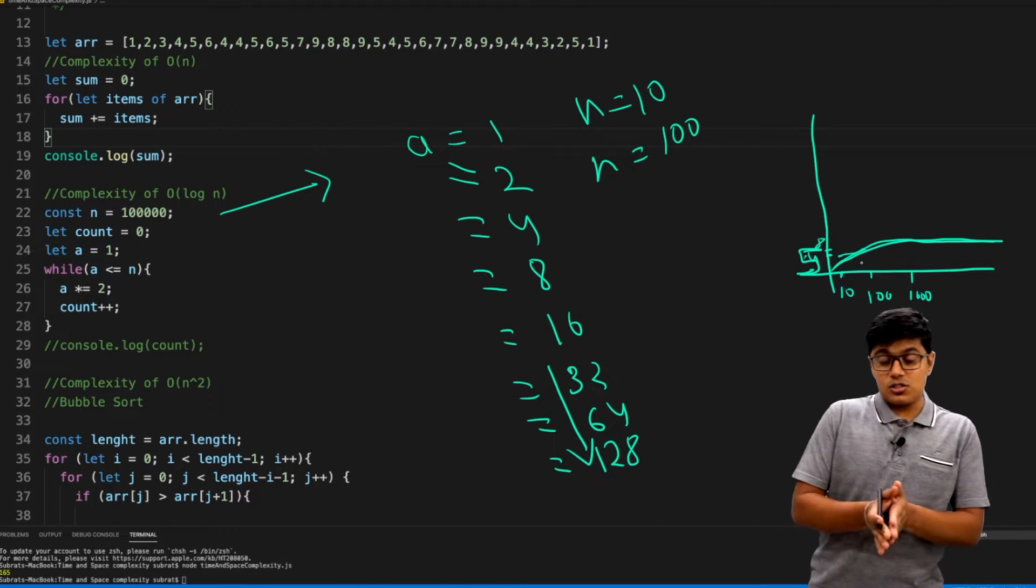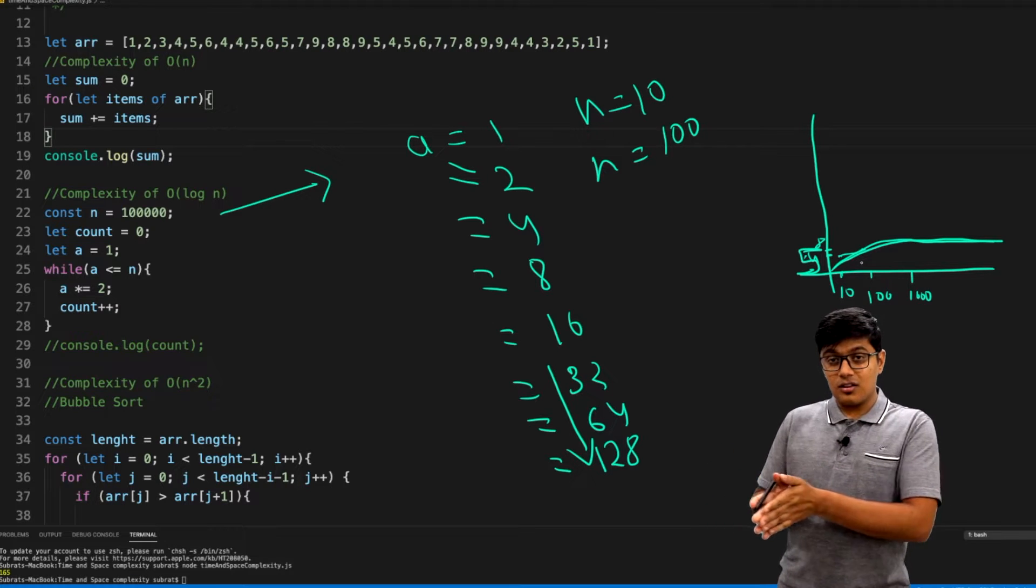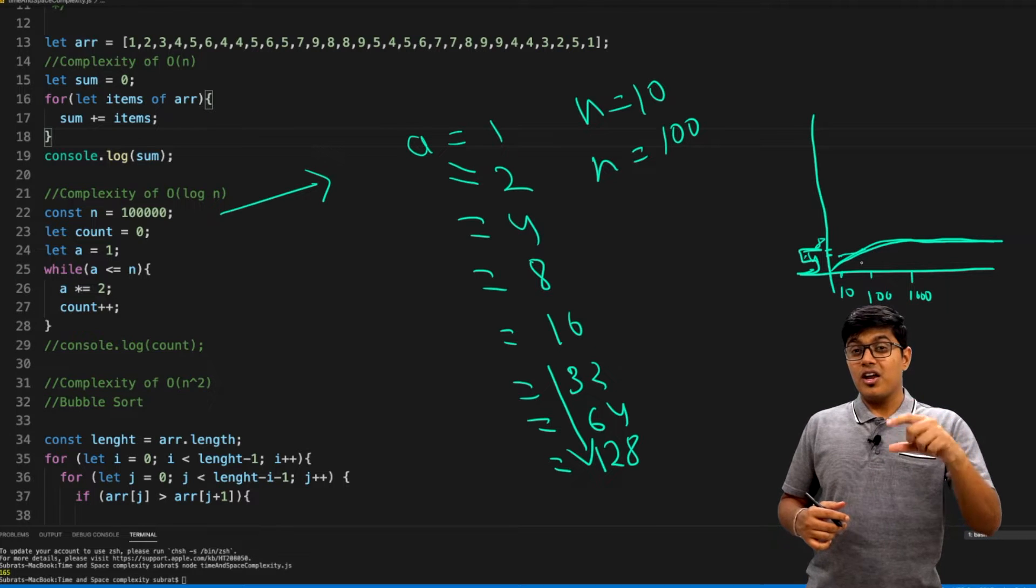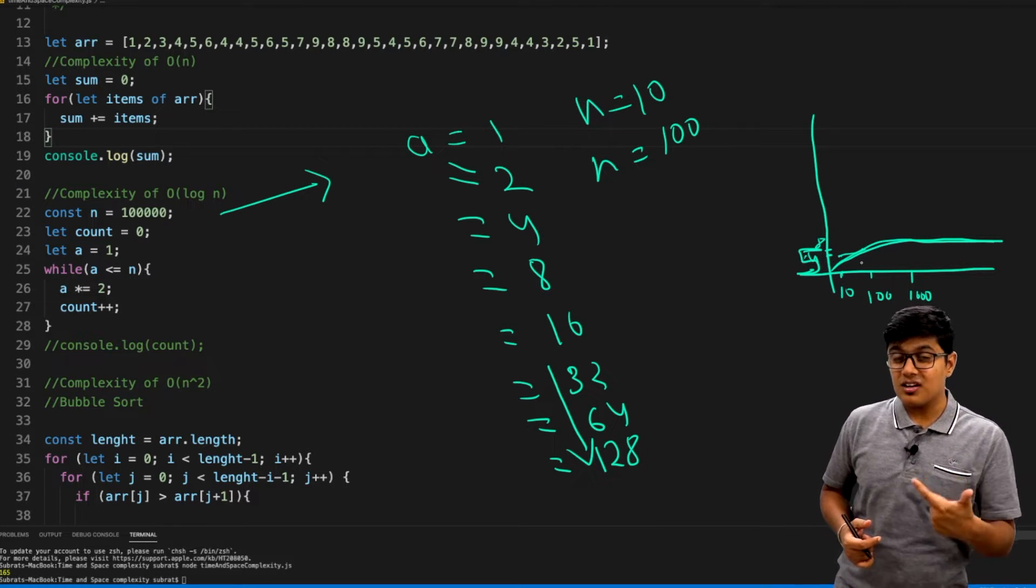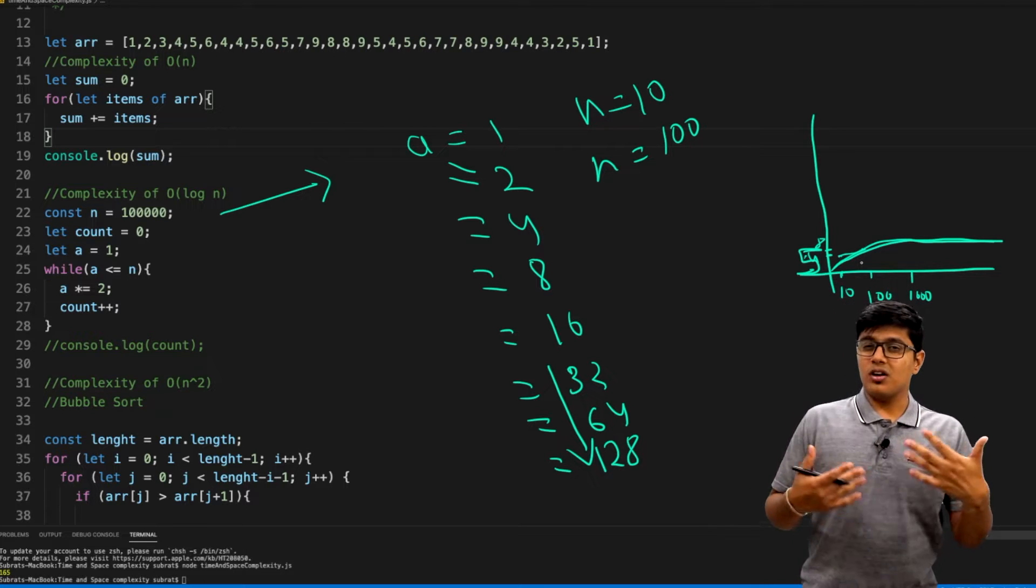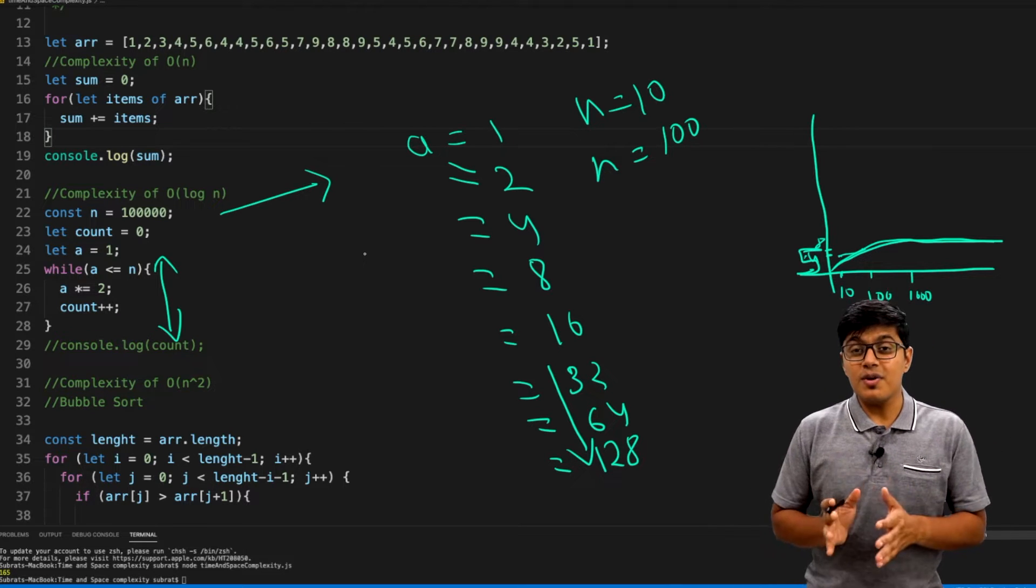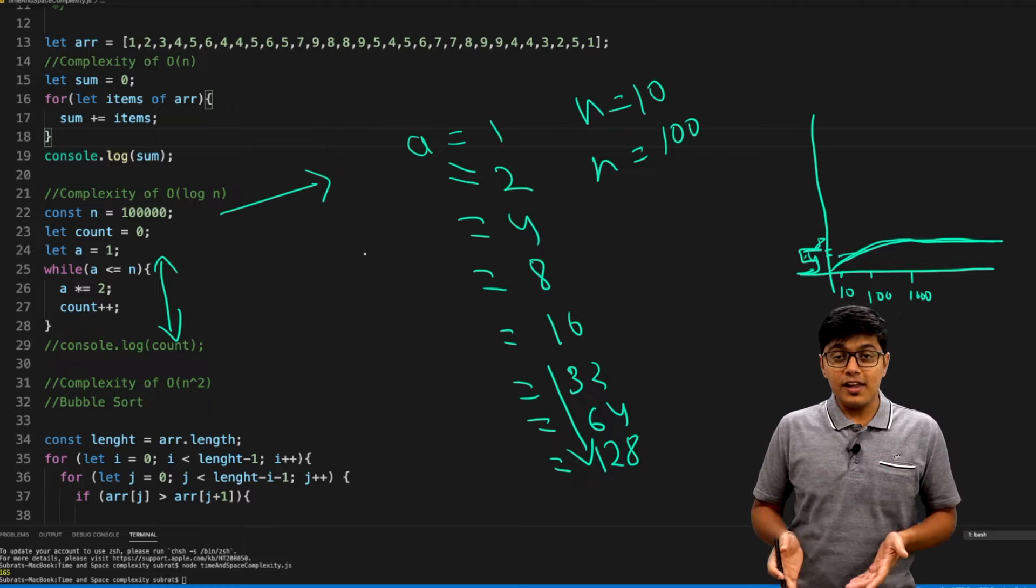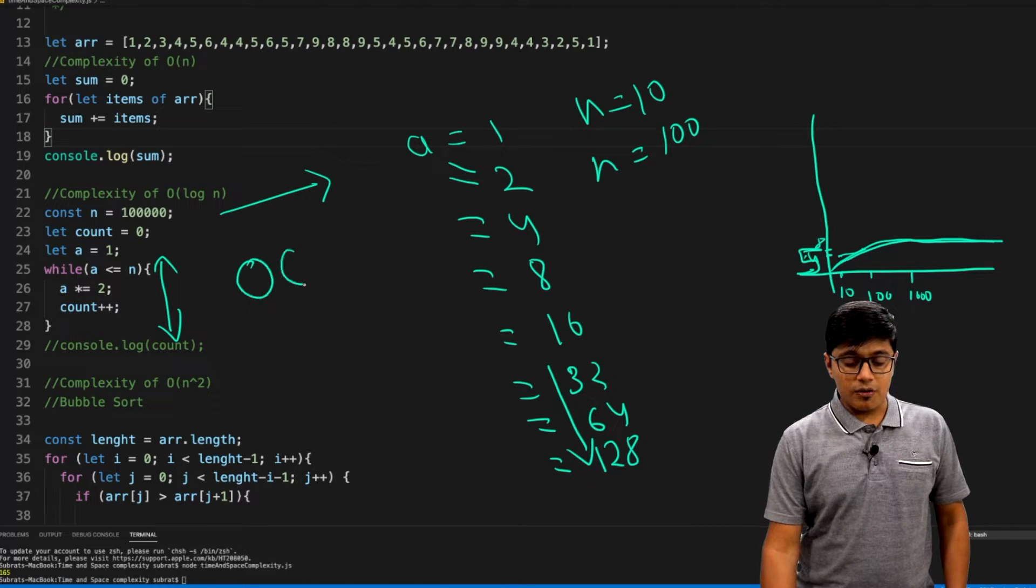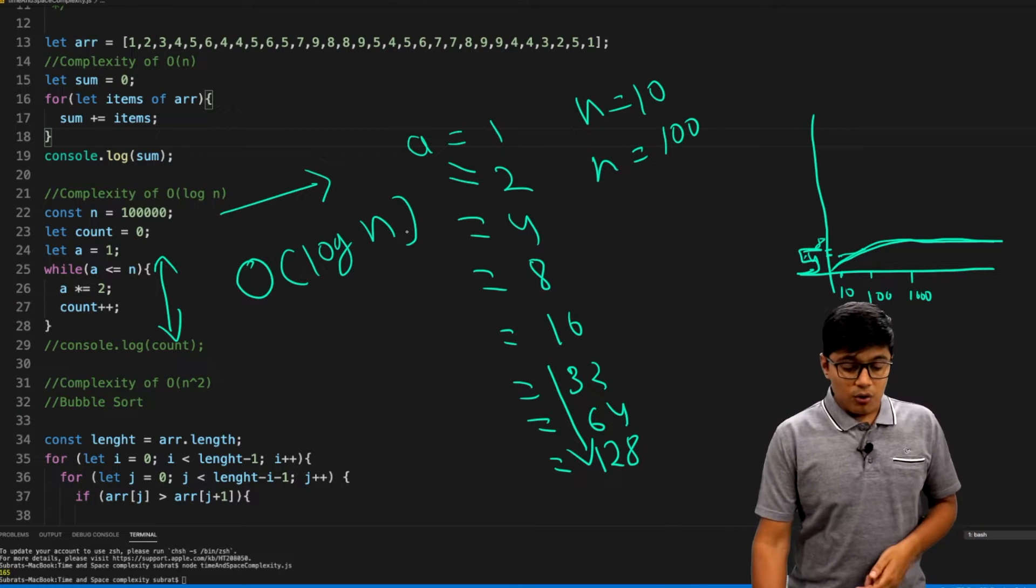If you go from down, your graph will be like this. This is what a logarithmic graph will be. As you keep on increasing your input a hundred times or a thousand times, your iteration will not be increased because it's getting multiplied by 2 or 3 or some values. The famous example will be binary search. Binary search has a time complexity of big O of log n.